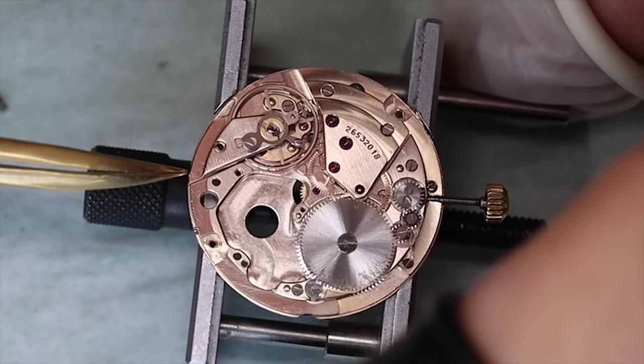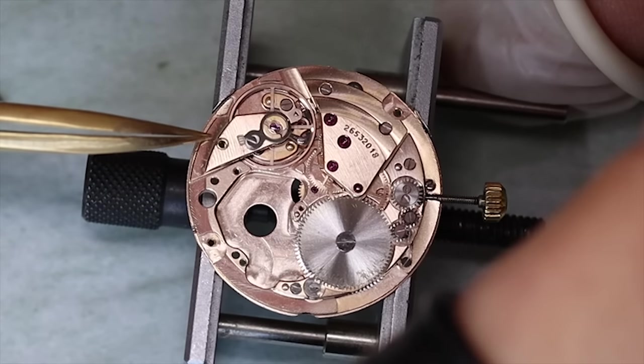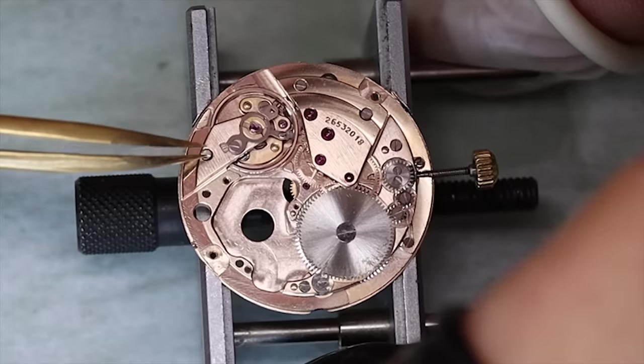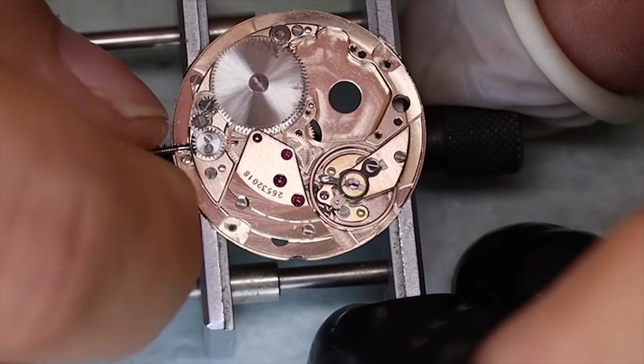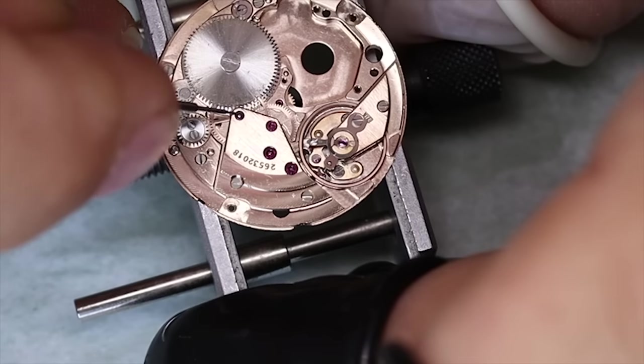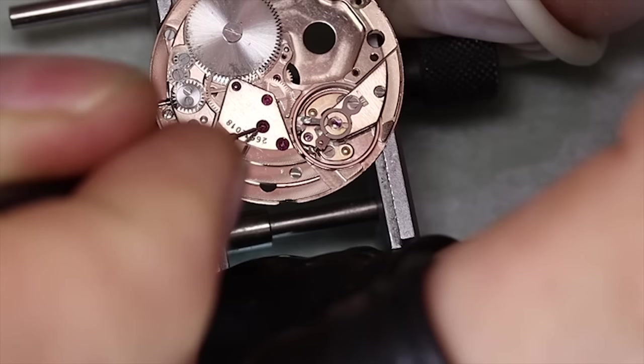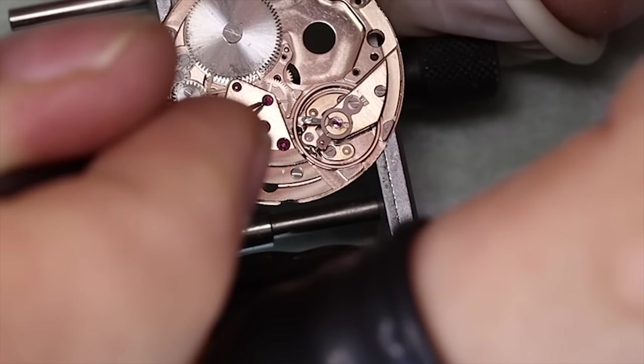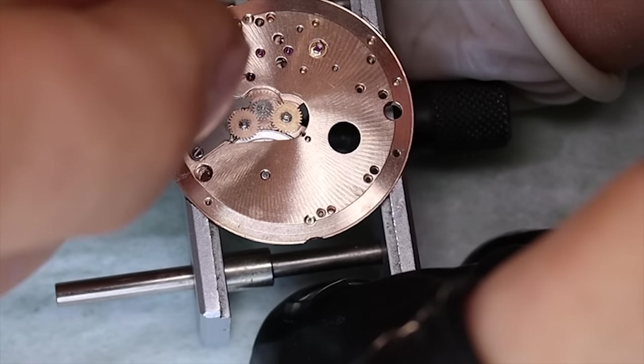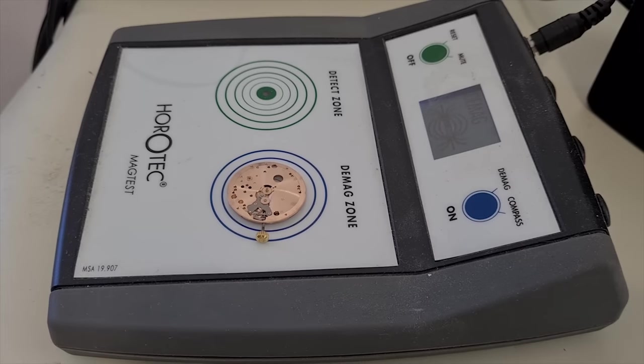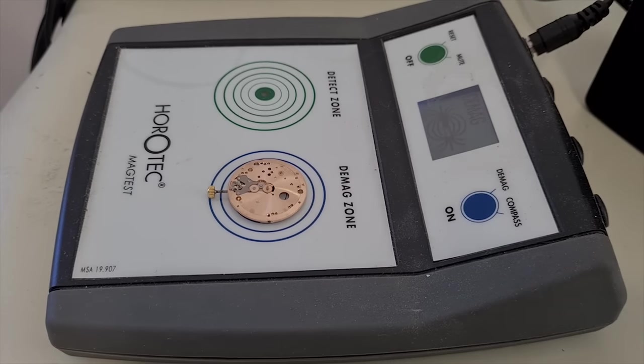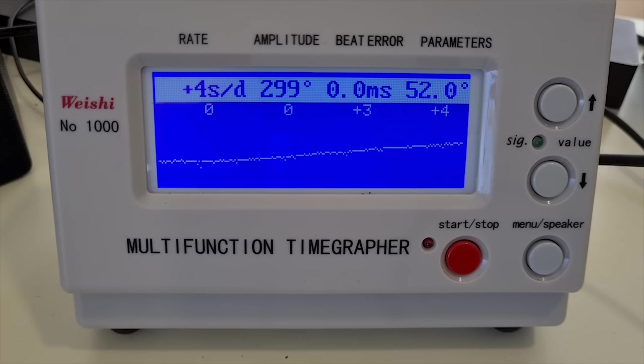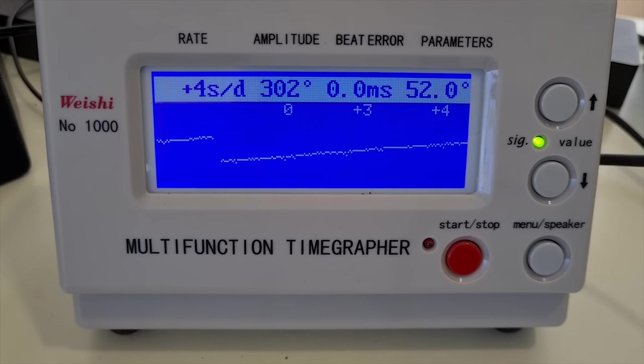So let's see if this baby runs now. Yeah, that looks nice. Let's give it a good wind and also oil the different pivots. Then we can see if we can get a little bit closer to chronometer performance. Yeah, we're okay with that. I prefer to have it go a few seconds fast.